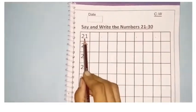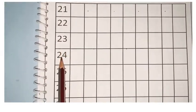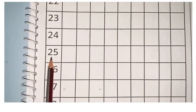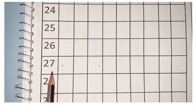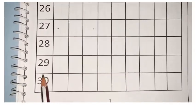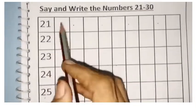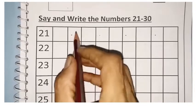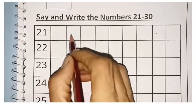21, 22, 23, 24, 25, 26, 27, 28, 29, 30. Now leave one row and write in the next row, next column.